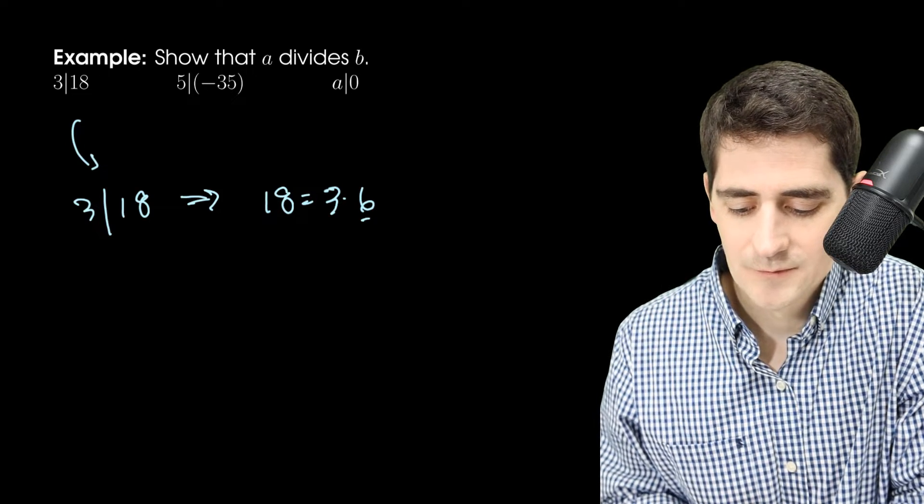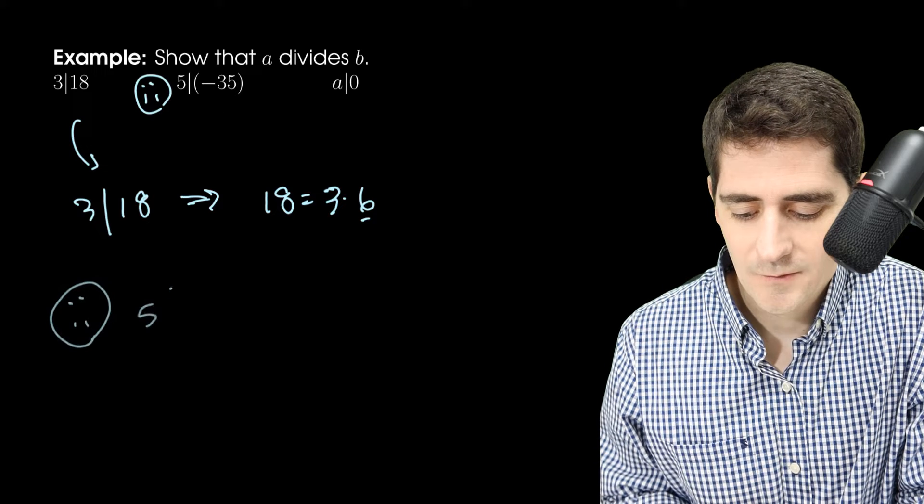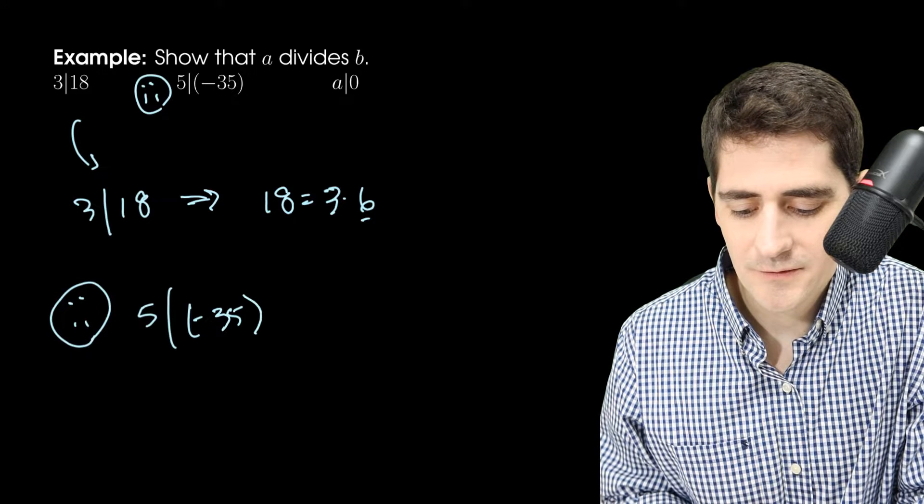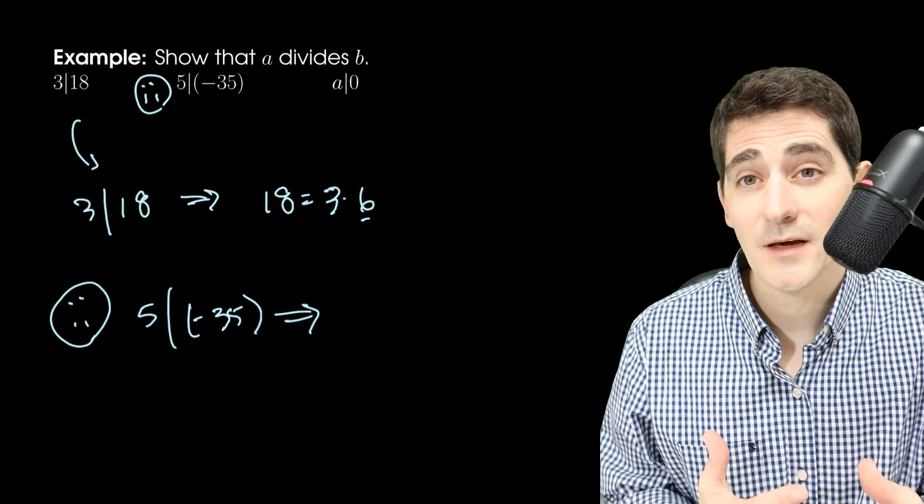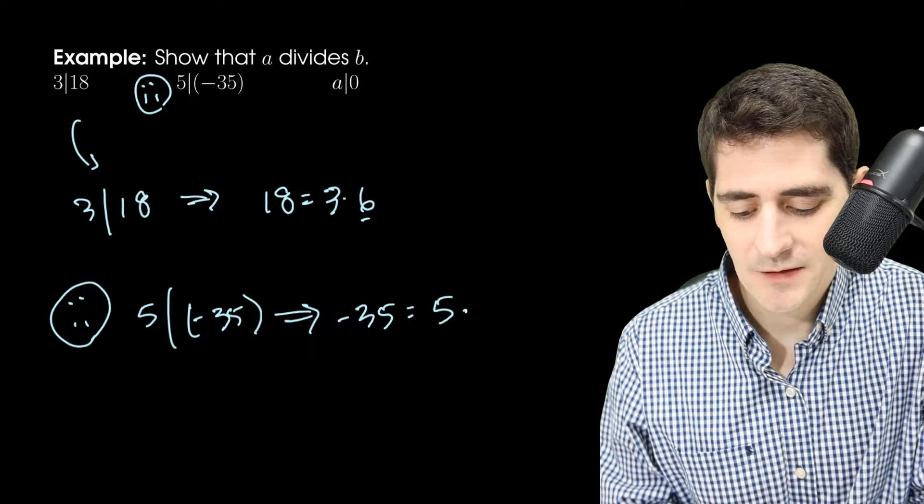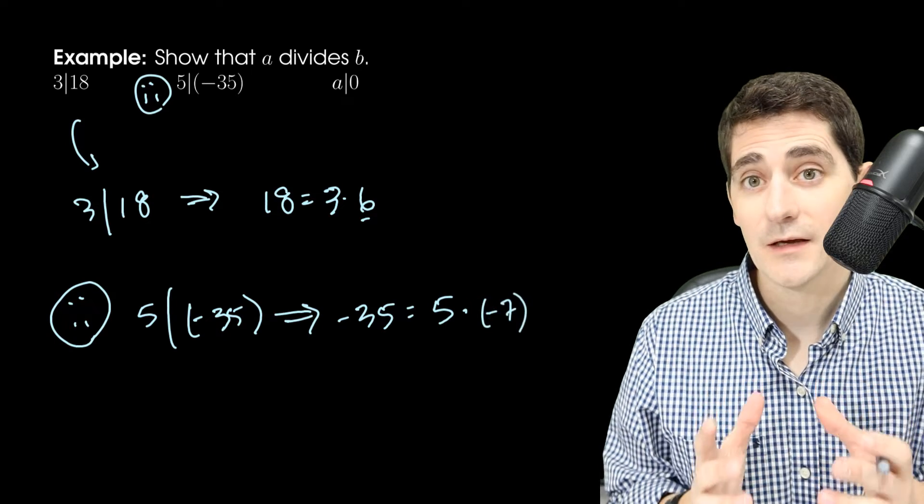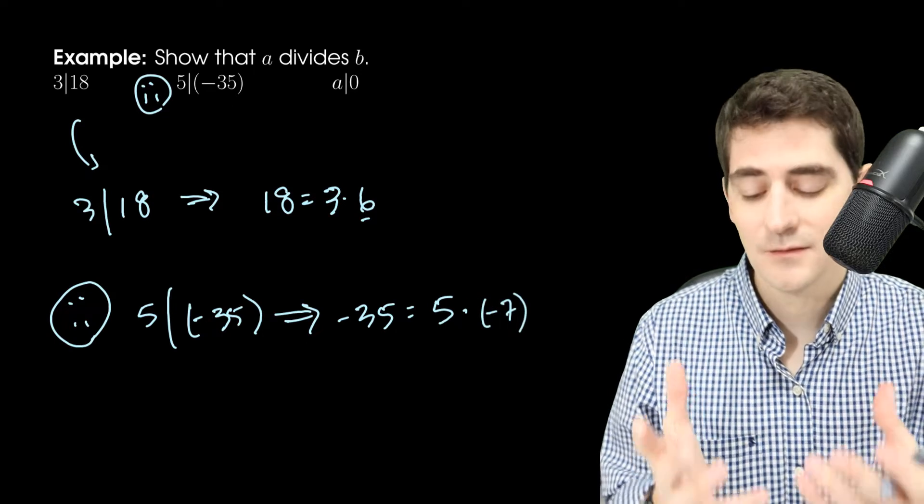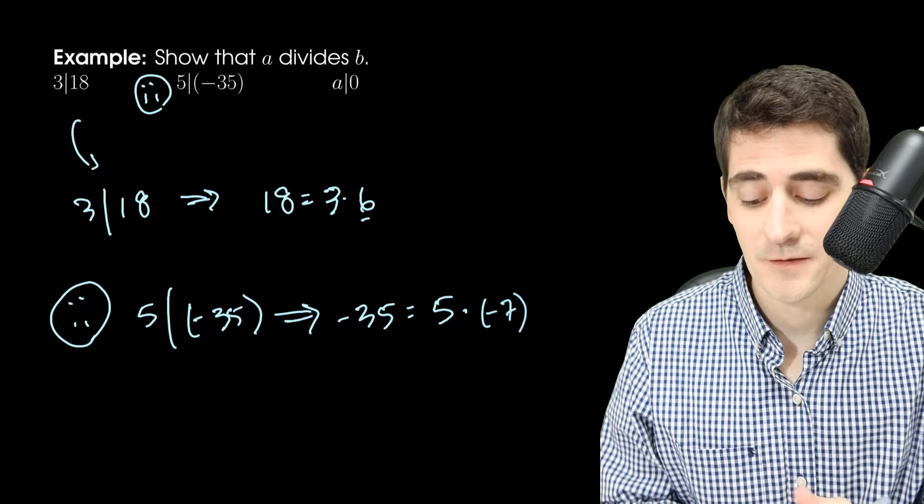Similarly, so I'll call this one 2. 5 divides negative 35. Am I sure about that? Yes, because negative 35 is 5 times something. So I have negative 35 is 5 times negative 7. 5 divides negative 35.